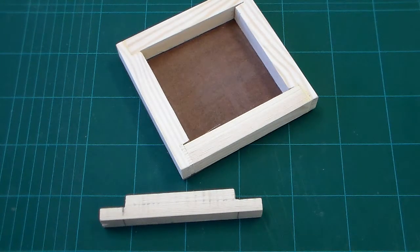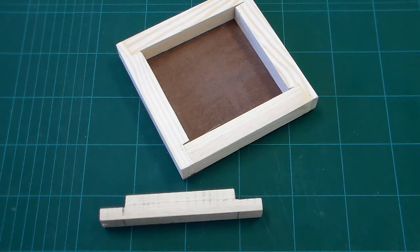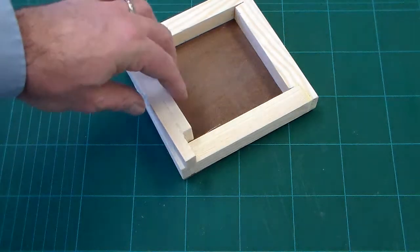Now we're going to look at marking out and cutting the rebate joints for the two pieces on each end of our tray.